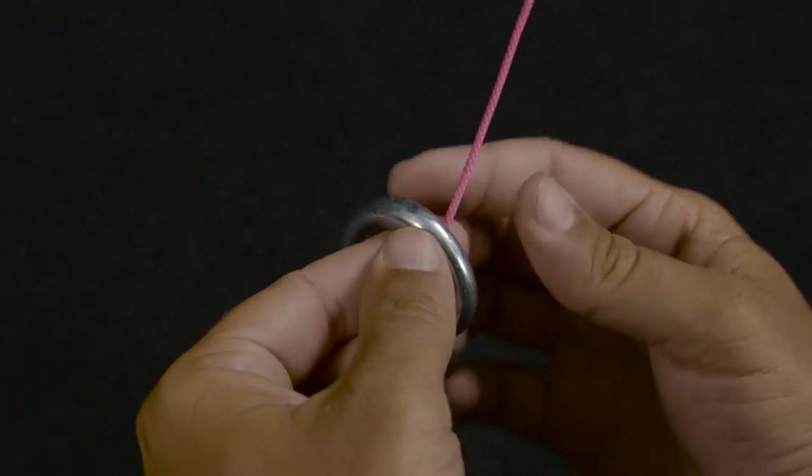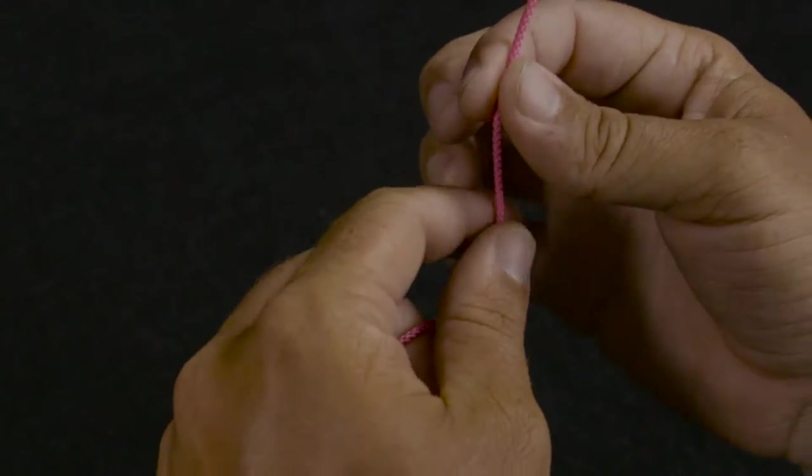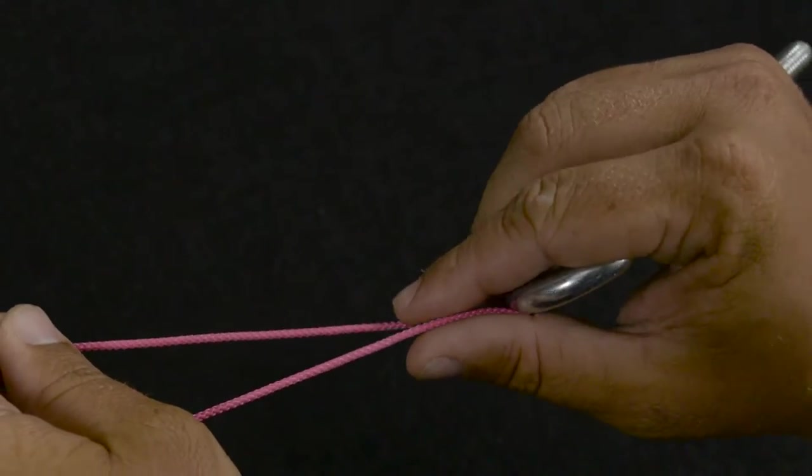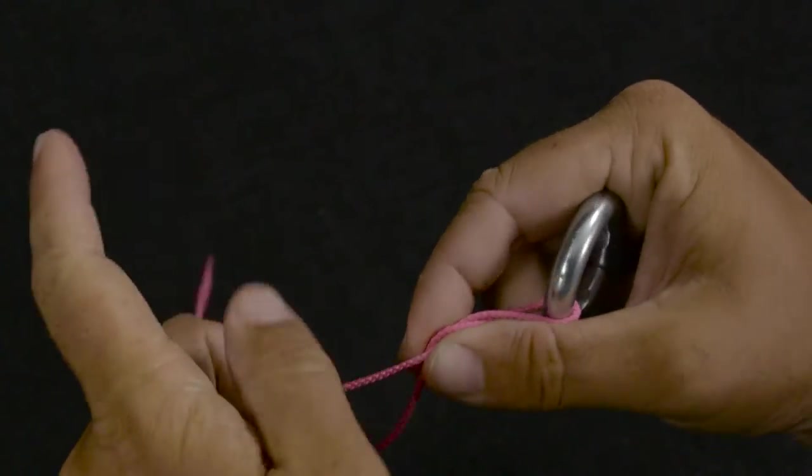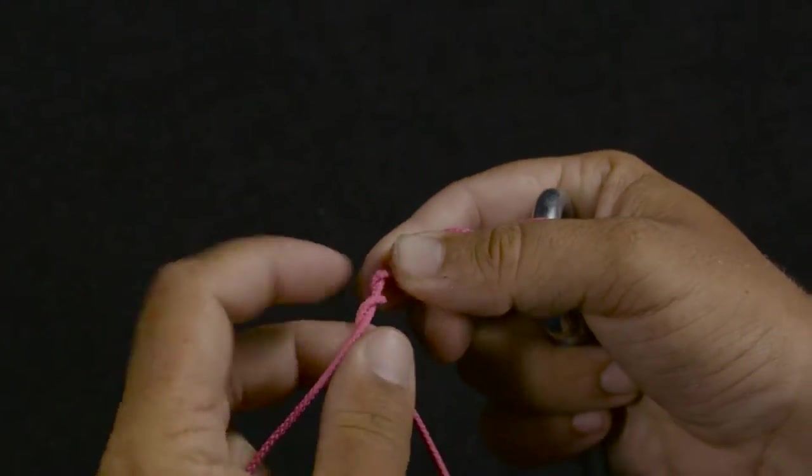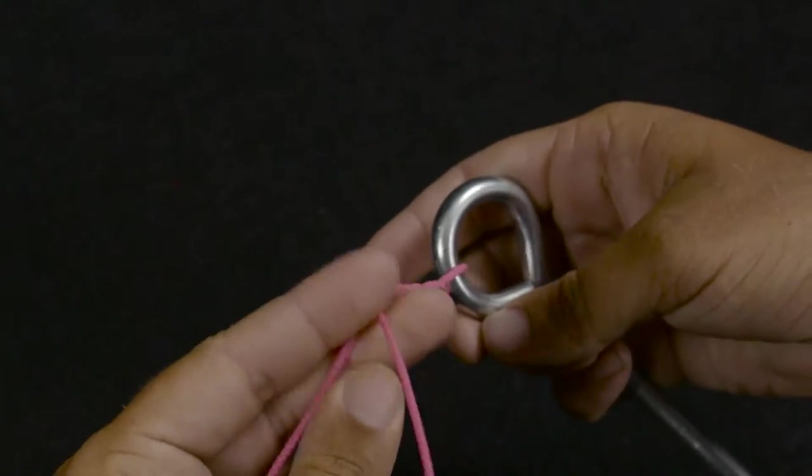So what you want to do is pass that string through the eye of the hook, or the fishing line, and then wrap it six times: one, two, three, four, five, six.